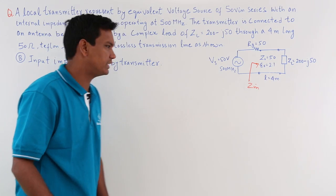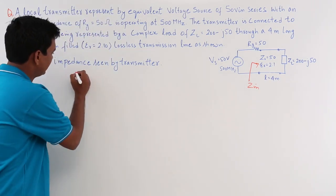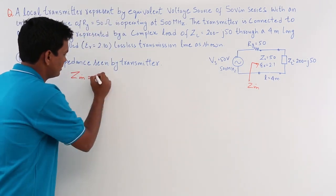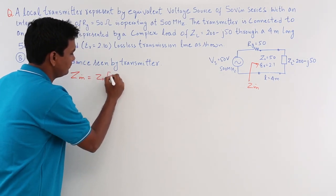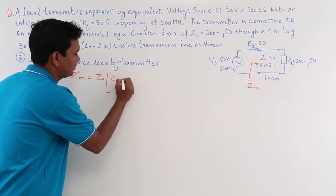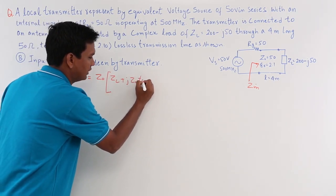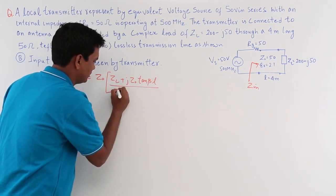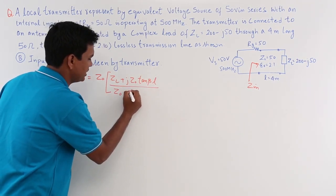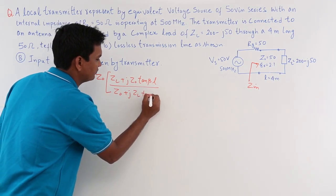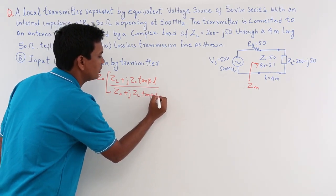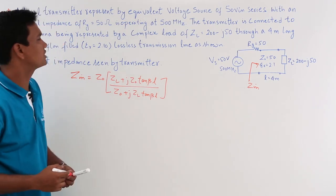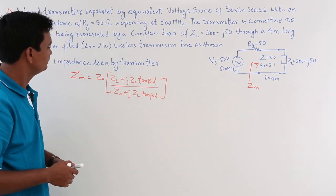What do we know about Z_in? Z_in, the input impedance, is given by: Z_naught times (Z_L + j·Z_naught·tan(βL)) divided by (Z_naught + j·Z_L·tan(βL)). This formula is for a lossless transmission line, and it is already given that it is a lossless transmission line.